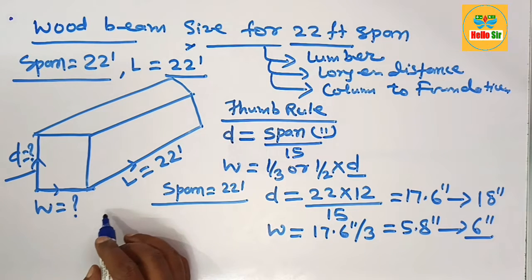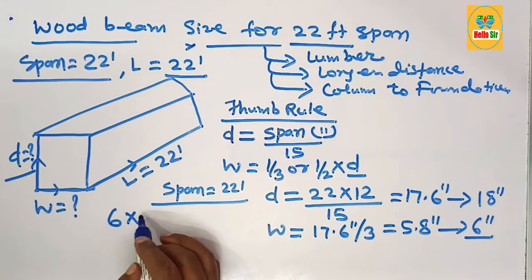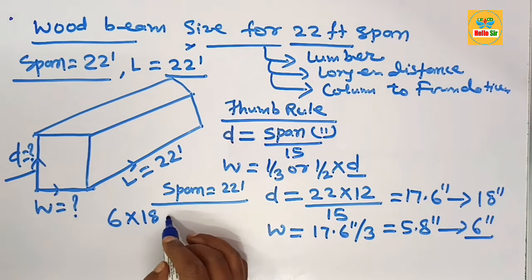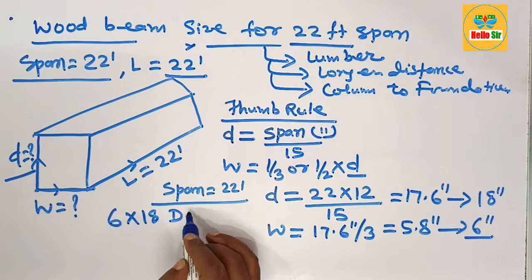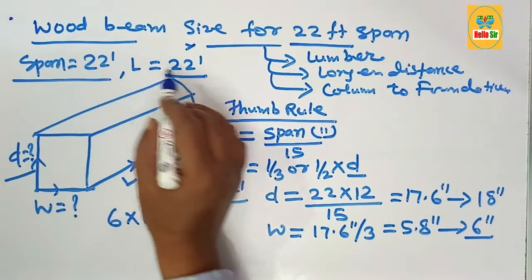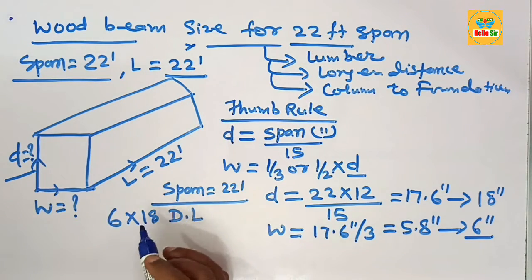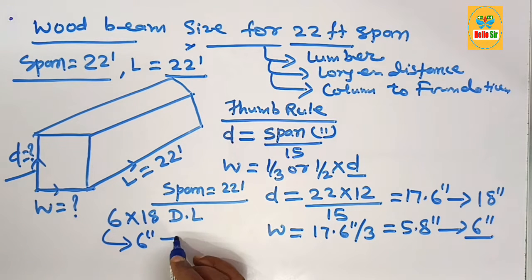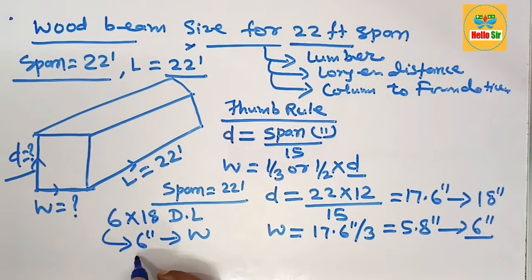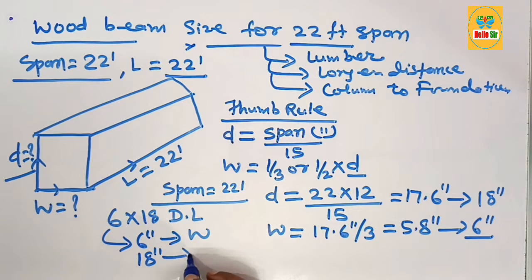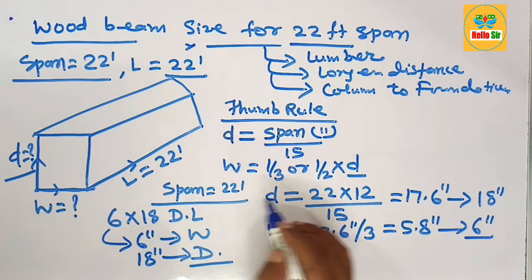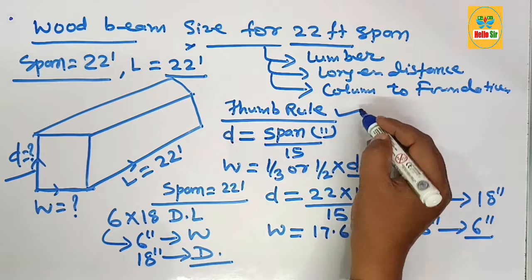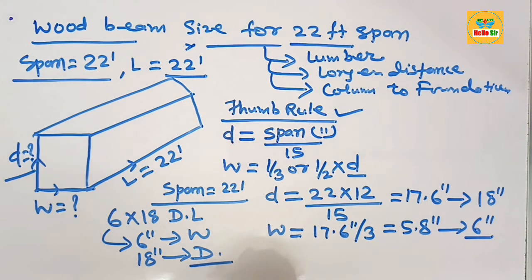Rounding these values, the depth converts to 18 inches and the width converts to 6 inches. This means you need a 6 by 18 inch dimensional lumber as a wood beam to span 22 feet, where 6 inches is the width section and 18 inches is the depth section. This calculation is based on the thumb rule for sizing of wood beams.